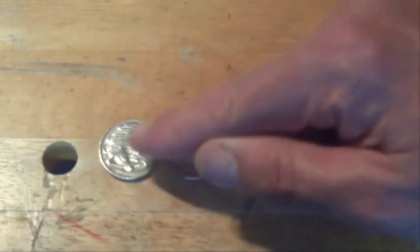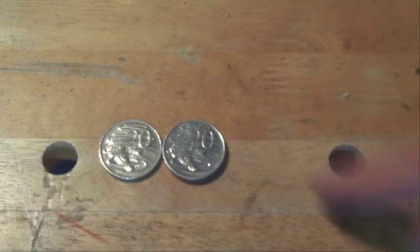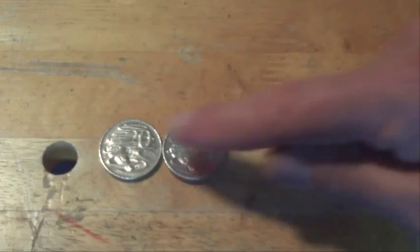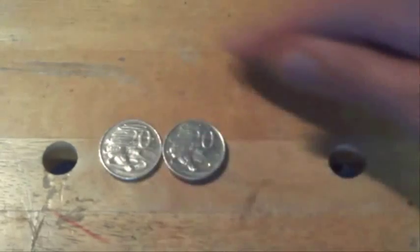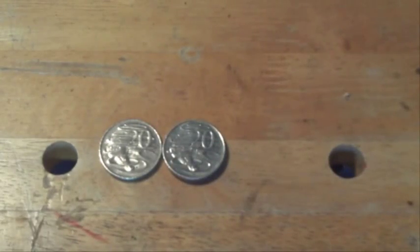Okay, so it's halfway around now, and the coin is facing in the same way as it did on the other side, so it's spun around through one rotation